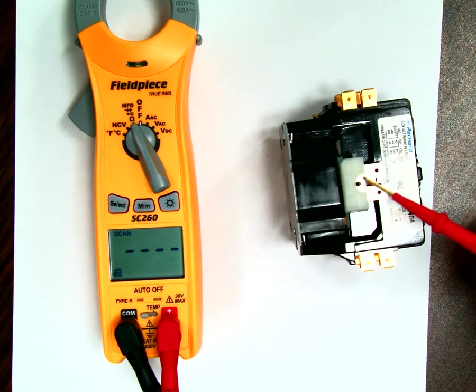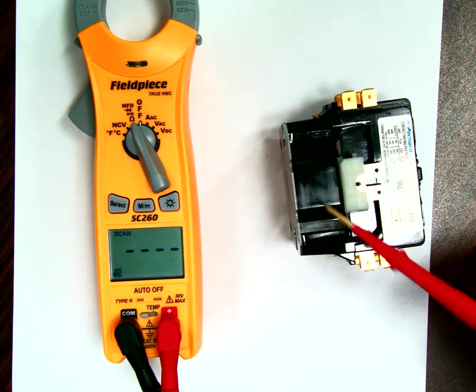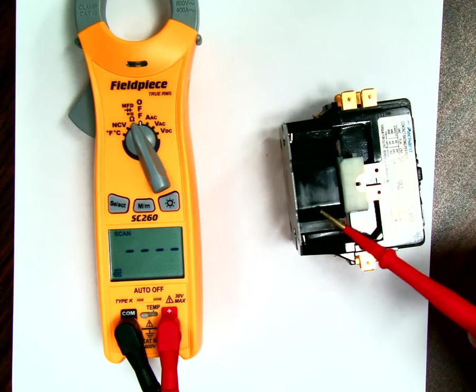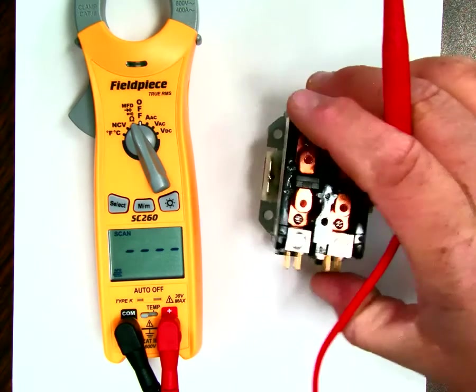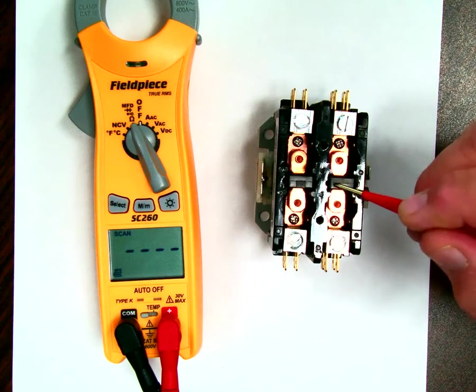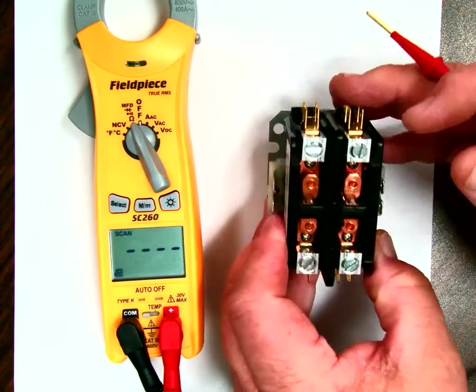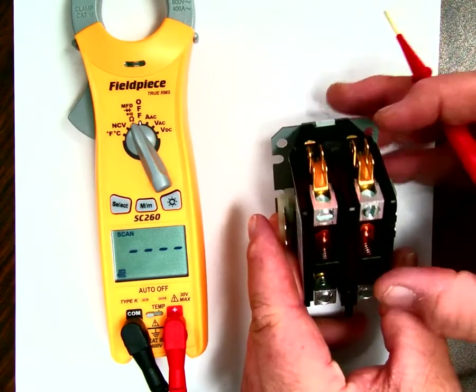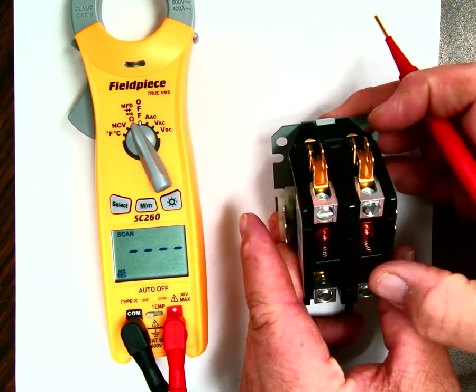This is the other end of the coil that's inside there that makes a magnetic field that, when you turn on that magnetic field, it pulls these down. If you can see it, let me get it where you can see it. It pulls that plunger down like that.